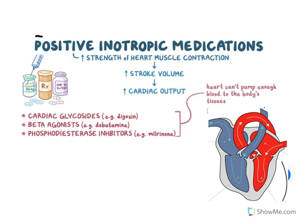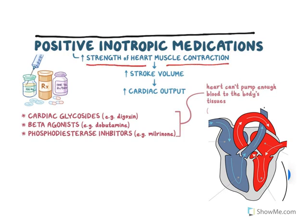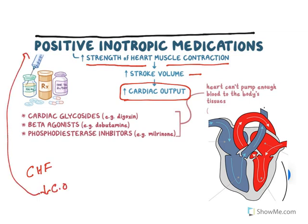These agents are known as positive inotropic medication. The job of these agents is they increase strength of heart muscle contraction, which results in increased stroke volume and increased cardiac output. The major symptom of congestive heart failure is a decrease in cardiac output, and so to increase that, these drugs are used.